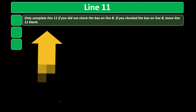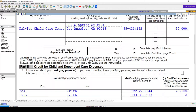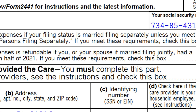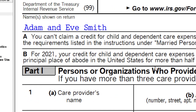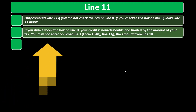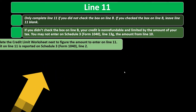Only complete line 11 if you did not check the box on line B. Box B relates to whether you lived in the United States. Recap for box B: for 2021, your credit for child and dependent care expenses is refundable if you or your spouse — if married filing joint — had a principal place of abode in the United States for more than half of 2021. If box B is not checked, that is the more unusual situation.